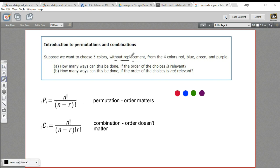Now they want to know how many ways can this be done if the order of choices is relevant, and how many ways can it be done if the order of choices is not relevant. That is the difference between a permutation and a combination. With a permutation, order matters. With a combination, the order doesn't matter.